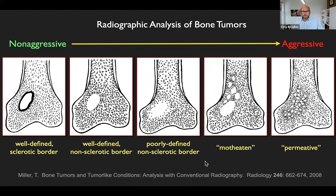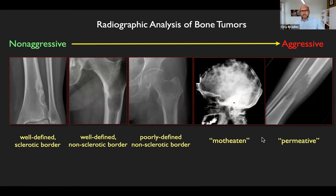Here are some radiographic examples: non-aggressive with well-defined sclerotic border, well-defined without that border, less well-defined, multifocal or moth-eaten, and permeative — just eating away the bone, where there's really no question it's an aggressive malignancy. This particular patient with multifocal calvarial lesions: you could think about metastatic disease or myeloma. This was a patient with metastatic lung cancer with extensive bone metastases.